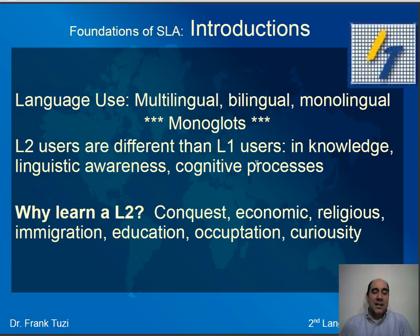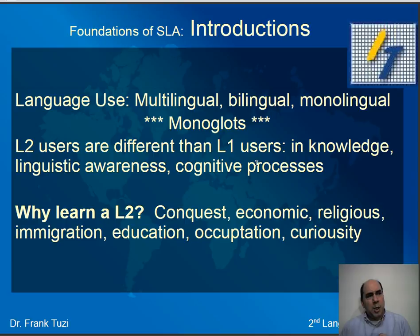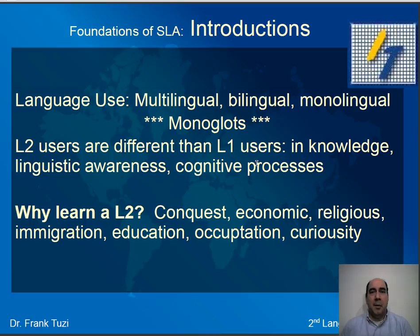Second language learners are different than first language learners in a variety of ways. The knowledge they possess is different from a monolingual person's, primarily because they can compare between the two. They can sense new nuances between words and see multiple ways of expressing an idea. They have that extra knowledge, and therefore they're going to have a different thinking process than monolinguals.